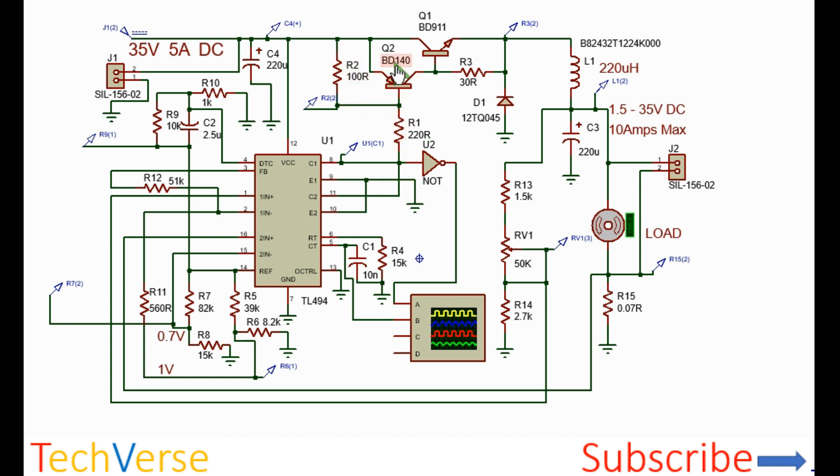The PNP transistor BD140 will be turned on since there is outflow of current from its base, and so there will be current flow to the base of the output transistor, the BD911.